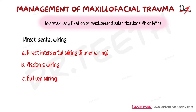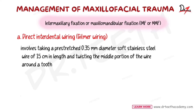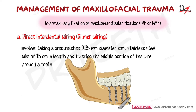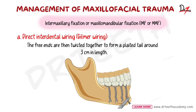Gilmer wiring is a simple, rapid method used to achieve immobilization, but it is a temporary method. It involves taking a pre-stretched 0.35 mm diameter soft stainless steel wire of 15 cm in length and twisting the middle portion of the wire around the tooth. You then twist the free ends together to form a plaited tail around 3 cm in length.